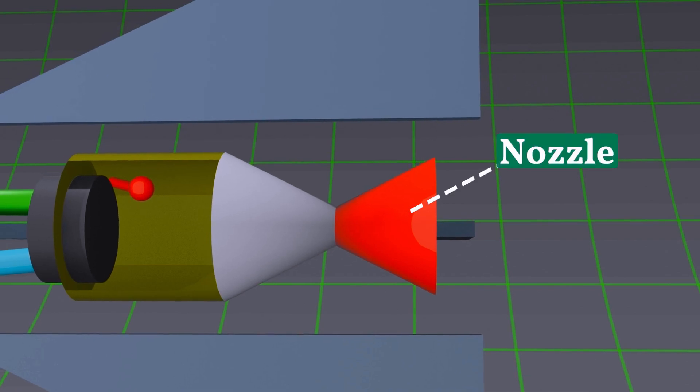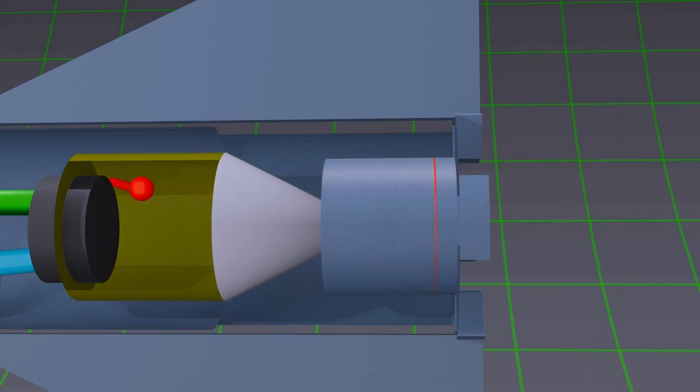This is the nozzle. The gas produced inside the combustion chamber rushes out at high speed through the nozzle.